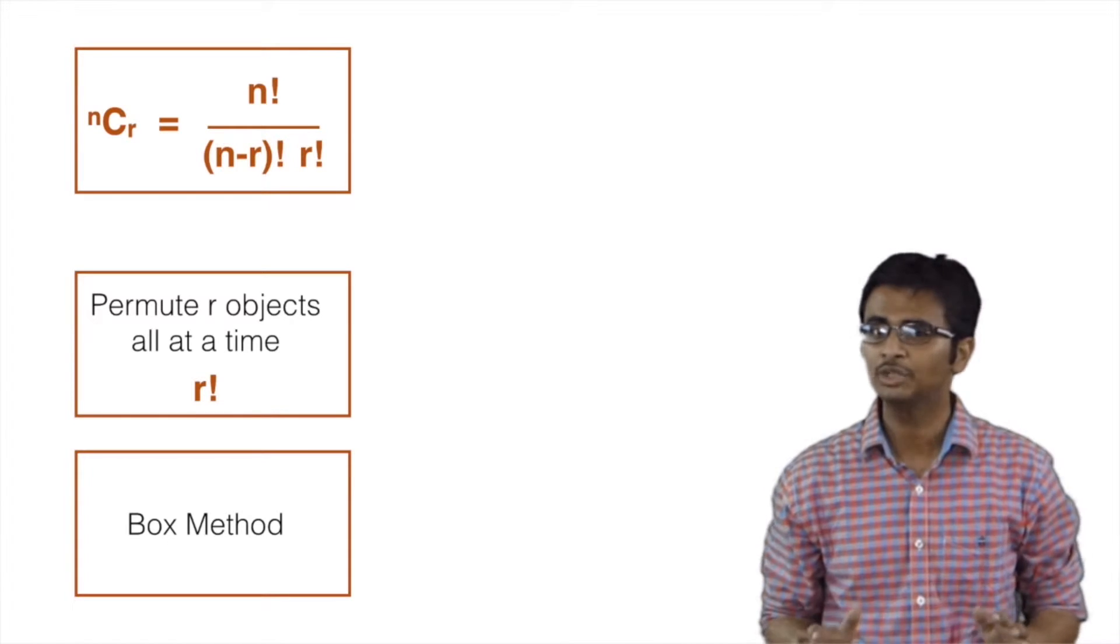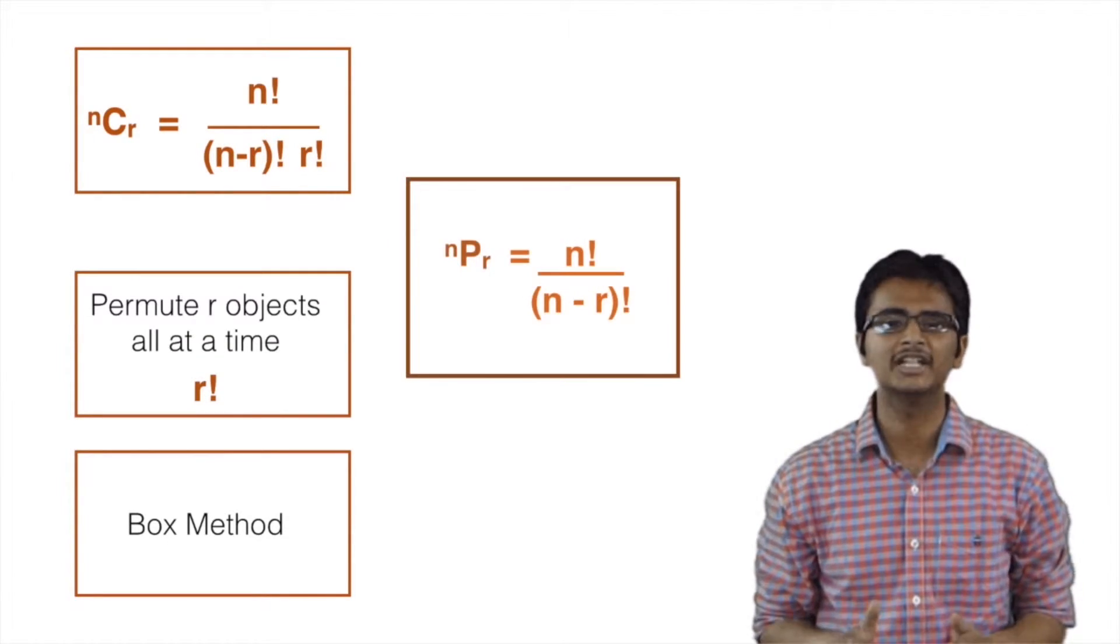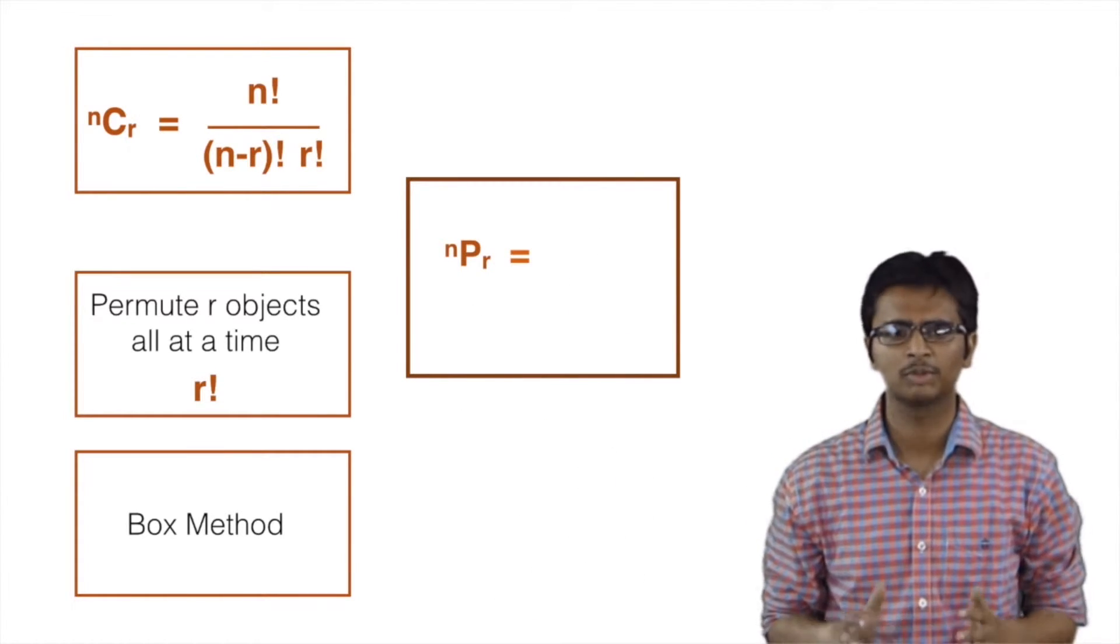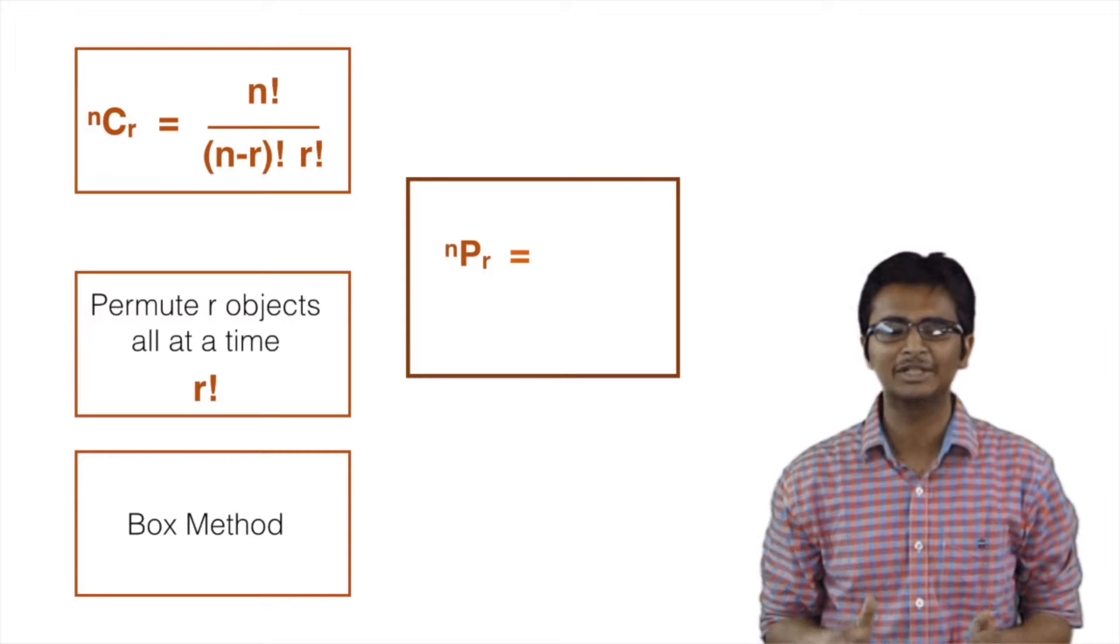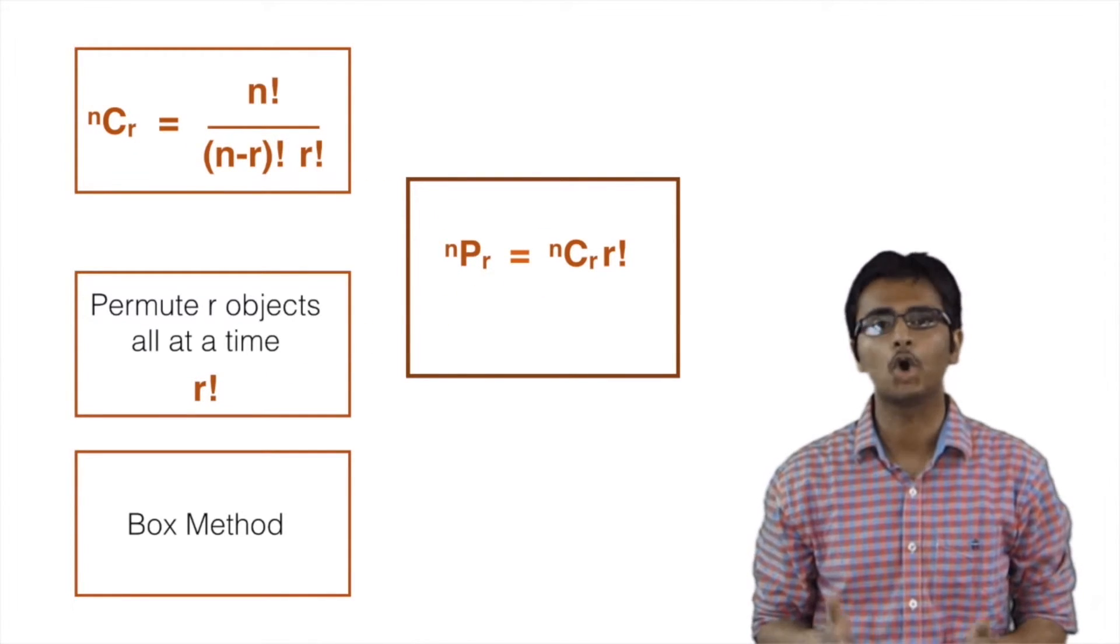Please note that we will not be using the formula for the number of permutations, which is NPR, ever. In situations where we need to find the number of permutations, we will make do with NPR equals NCR into R factorial always.